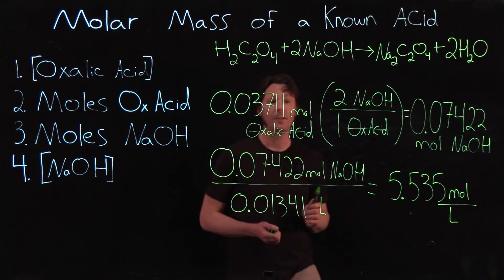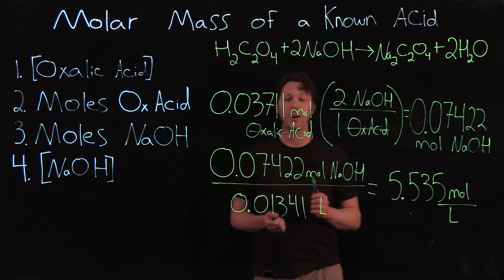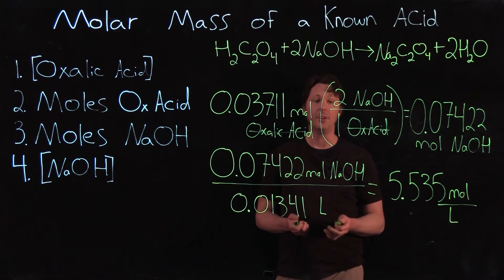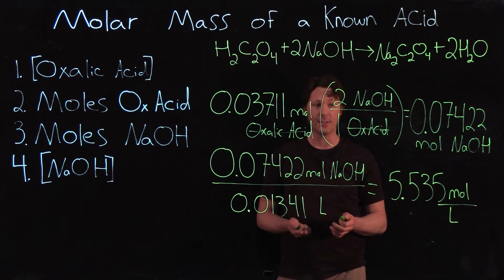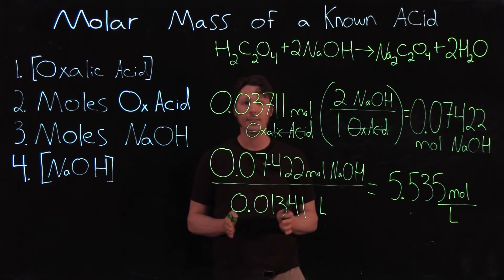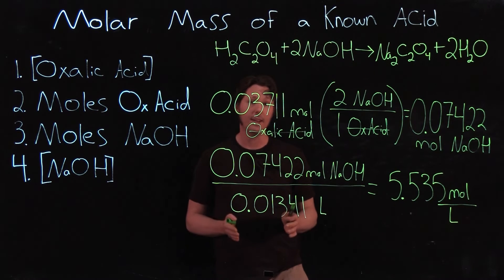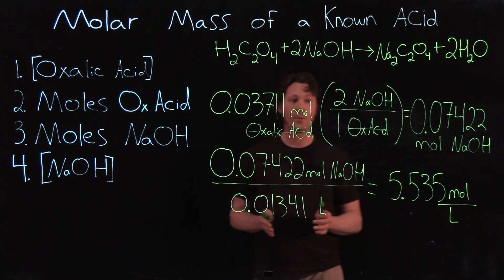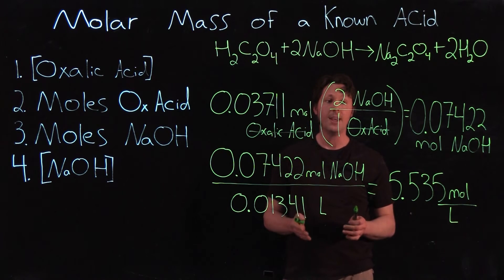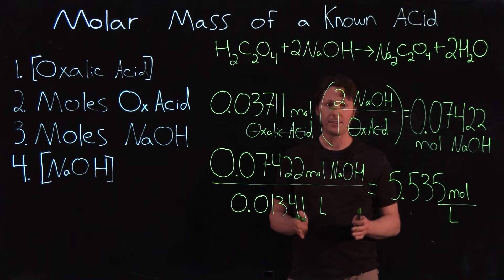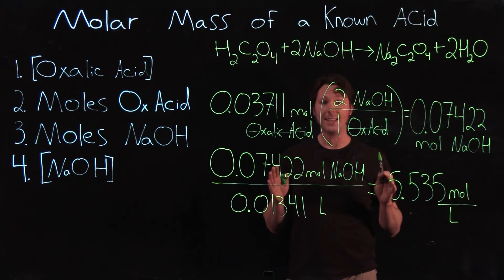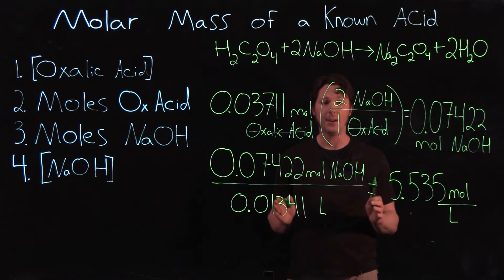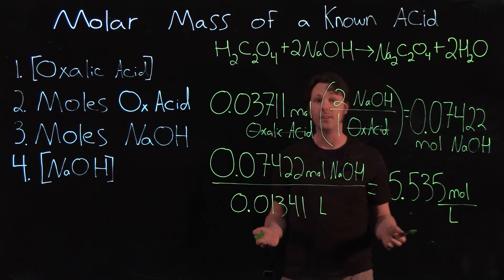Of the calculations performed so far, you'll do this last one three times using burette data from your three trials to calculate three different sodium hydroxide solution concentrations. Then, in post lab question two, you'll average those three sodium hydroxide concentrations into a single figure and use that single figure in your next series of calculations.